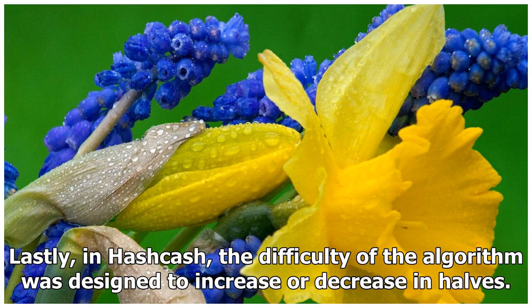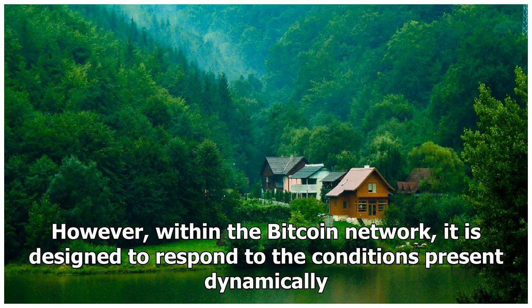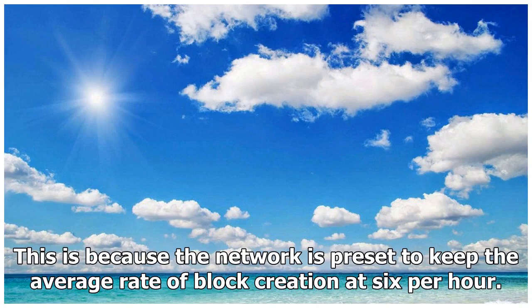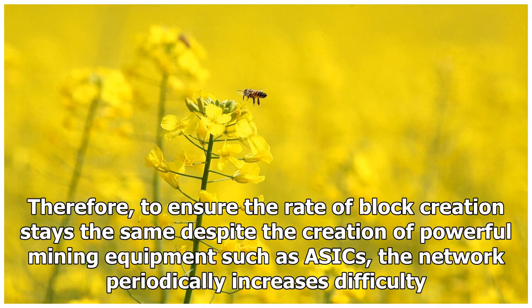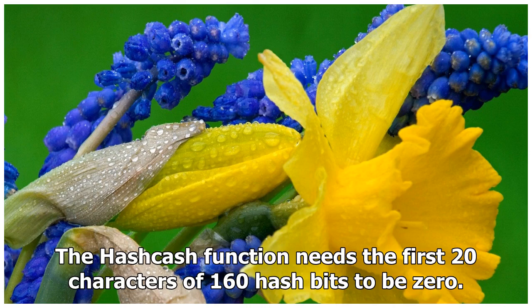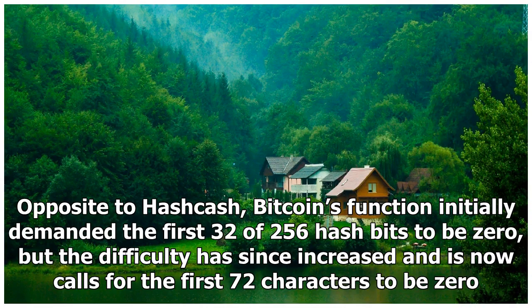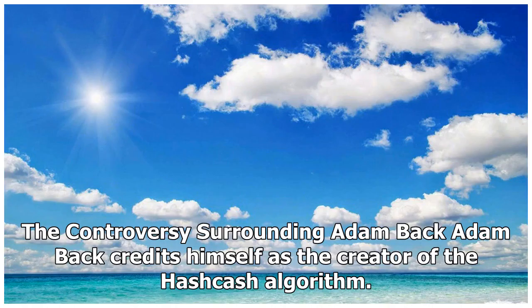Lastly, in Hashcash the difficulty of the algorithm was designed to increase or decrease in halves. However, within the Bitcoin network it is designed to respond to conditions dynamically. This is because the network is preset to keep the average rate of block creation at 6 per hour. Therefore, to ensure the rate of block creation stays the same despite the creation of powerful mining equipment such as ASICs, the network periodically increases difficulty. The Hashcash function requires the first 20 characters of 160 hash bits to be zero. Opposite to Hashcash, Bitcoin's function initially demanded the first 32 of 256 hash bits to be zero, but the difficulty has since increased and now calls for the first 72 characters to be zero.